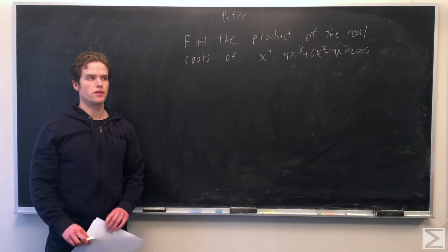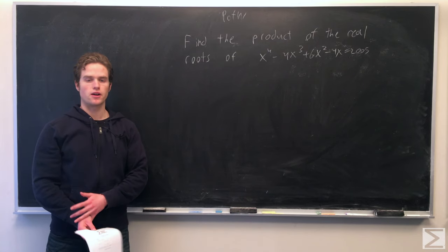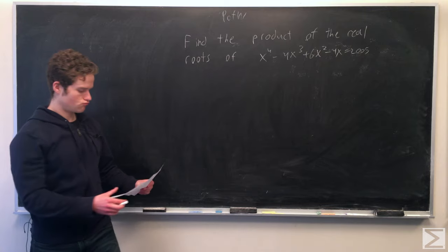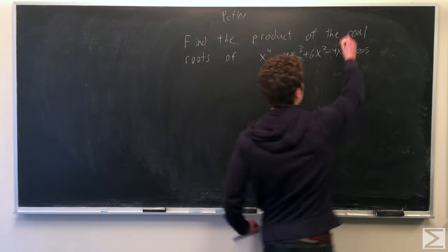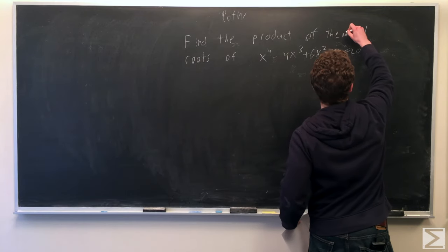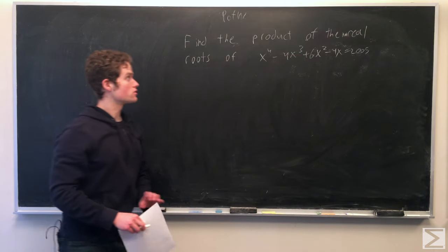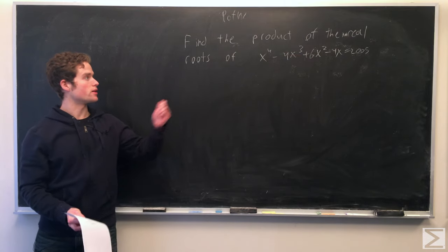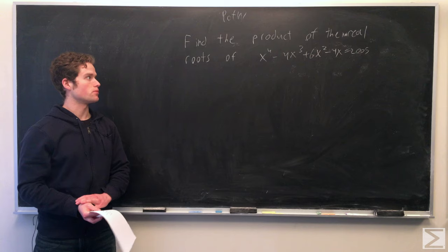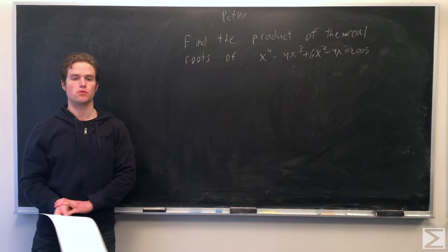Welcome to Center of Math Problem of the Week. For this week's problem, we want to find the product of the non-real roots of the equation x to the 4th minus 4x cubed plus 6x squared minus 4x equals 2005.